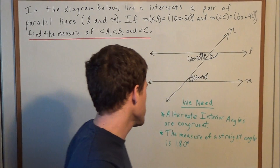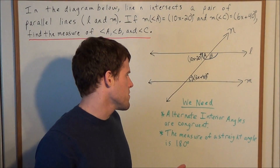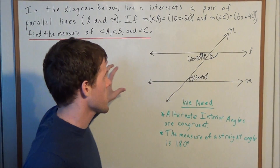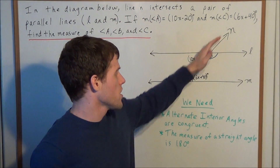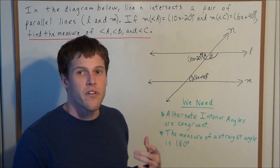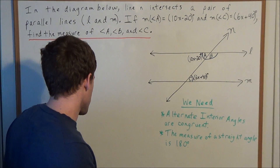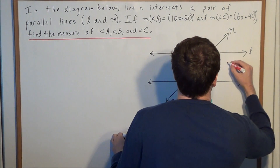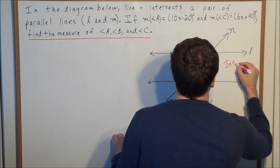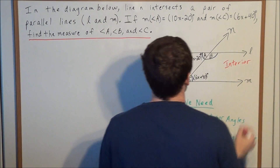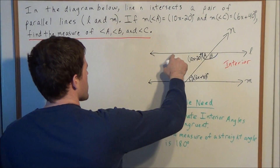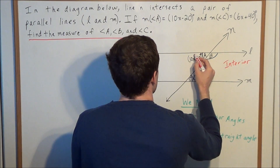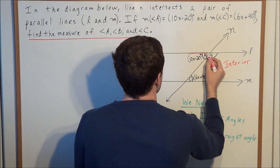For this problem we're going to utilize the alternate interior angles theorem, which states when we have a pair of parallel lines, in this case L and M, cut by the transversal line N, then alternate interior angles are congruent. The alternate interior angles are located at this intersection here, in the interior section of the diagram. They're on alternating sides of the transversal line, and the easy way to identify them is to draw in a Z.